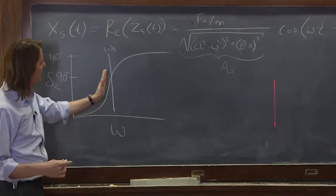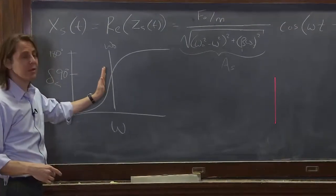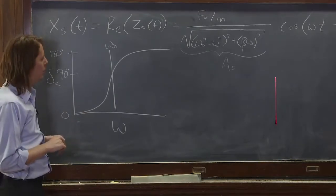So unlike the amplitude resonance, this one occurs really right on omega naught, not at some reduced amplitude.